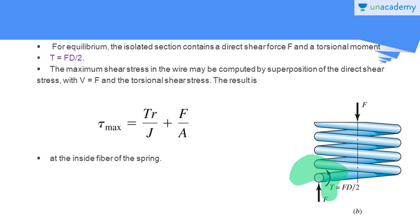The magnitude Tr/J is obtained from the torsion relation for beams under torsion — if you want to know how to obtain this relation, refer to the lectures on torsion in beams, which is in the course Mechanics of Materials Part 1. The maximum stress τ_max = Tr/J + F/A is obtained at the inside fiber of the spring. This cross-section corresponds to the inside fiber, which is why we get the stress given by this relation.